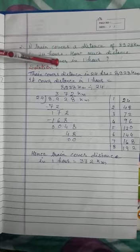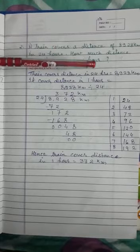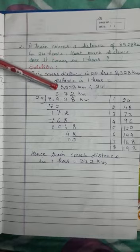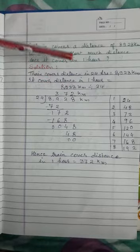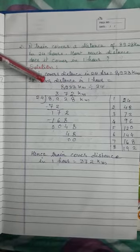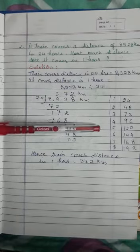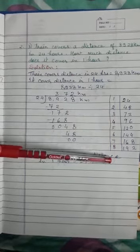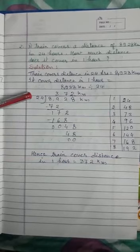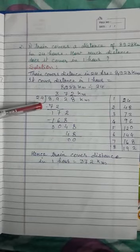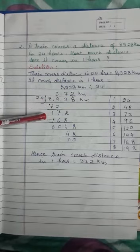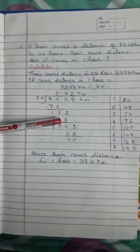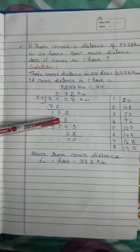Distance covered in one hour is equal to 8928 kilometers divided by 24. Students, first of all we will write the table of 24. After writing the table, you do division.